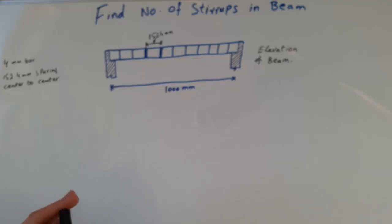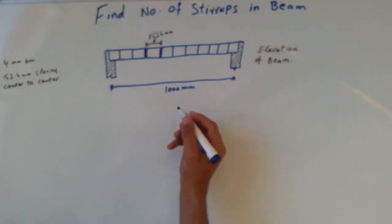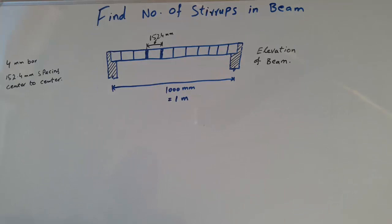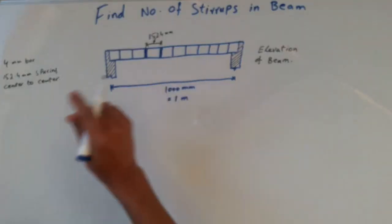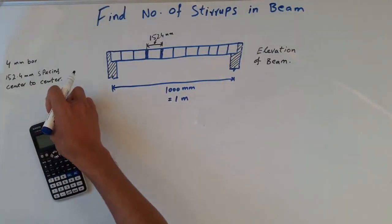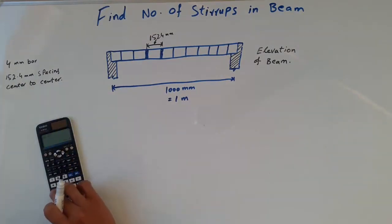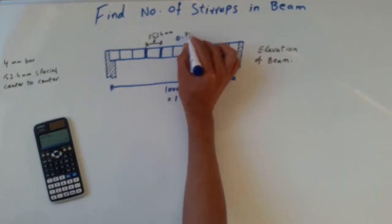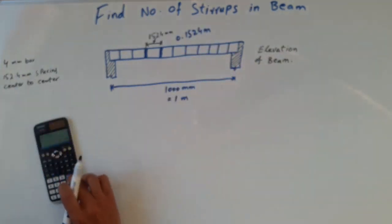First of all, we need to convert all dimensions to the same unit. 1000 millimeters equals 1 meter. 152.4 millimeters divided by 1000 gives us 0.1524 meters. And 4 millimeters divided by 1000 gives us 0.004 meters.